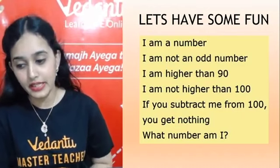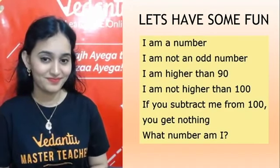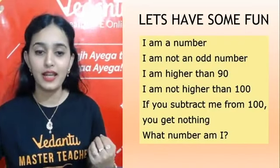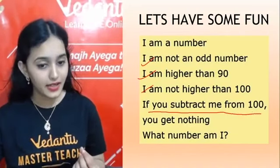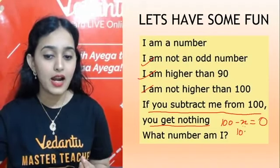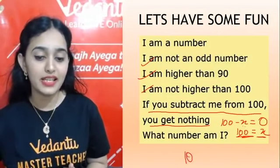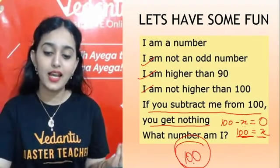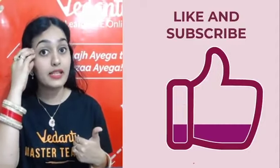The answer: the other lines are just to confuse you. The key line is 'if you subtract me from 100, you get nothing,' meaning 100 − x = 0, so x = 100. The answer is 100. The rest of the clues were just distractors. If you liked the video, hit the like button and subscribe to the channel!